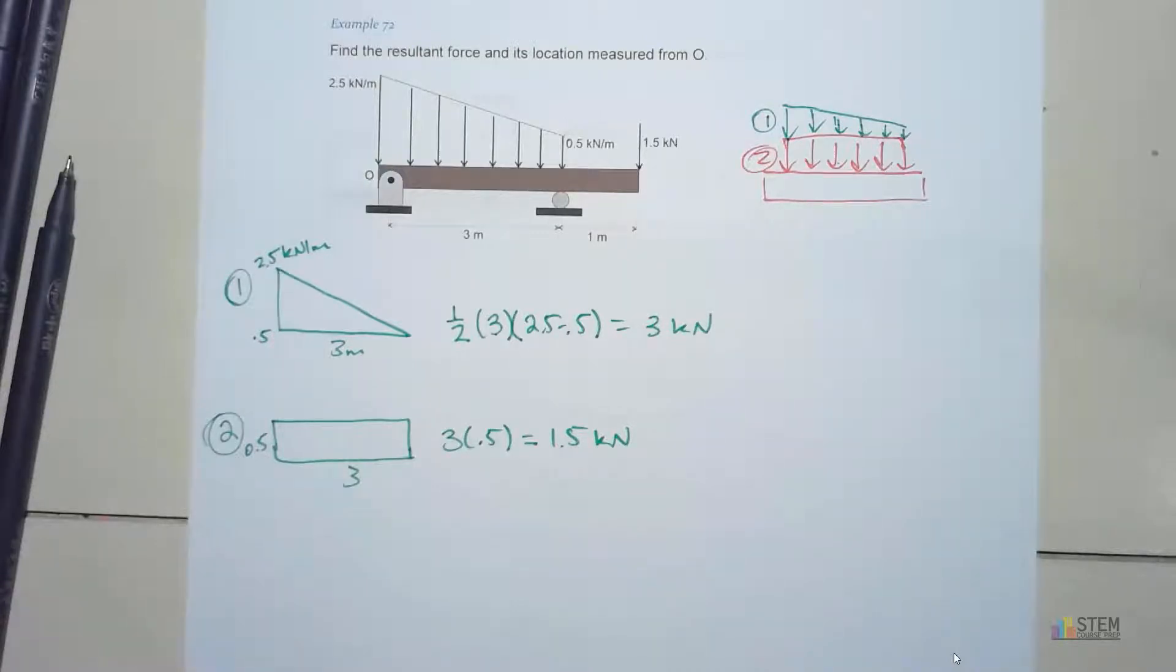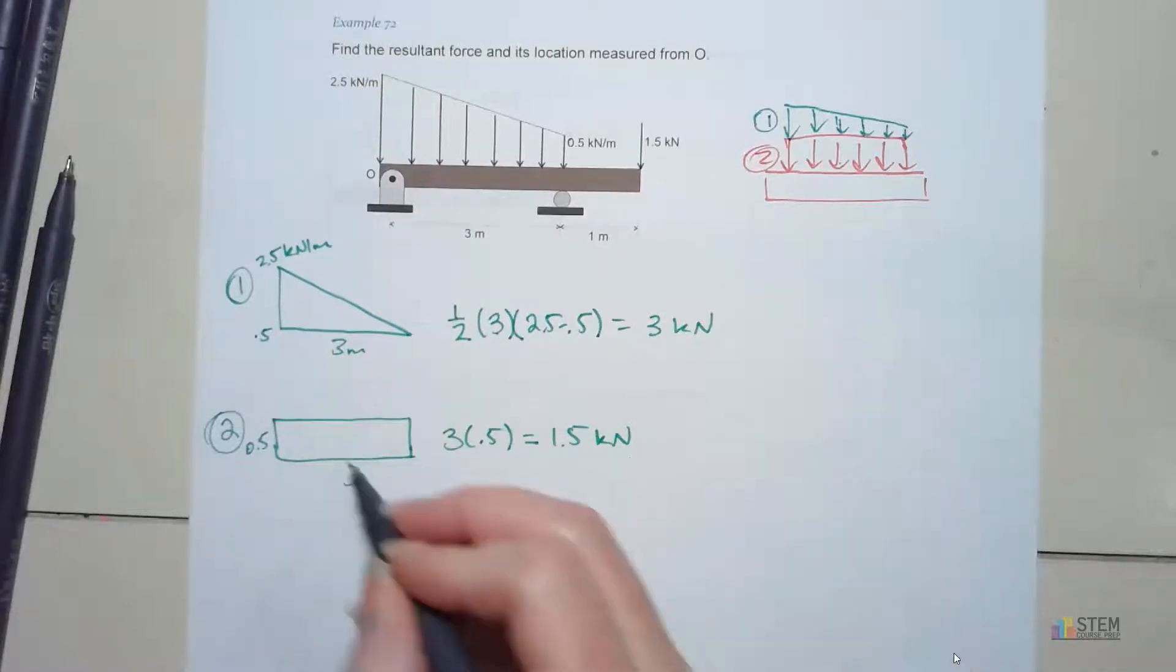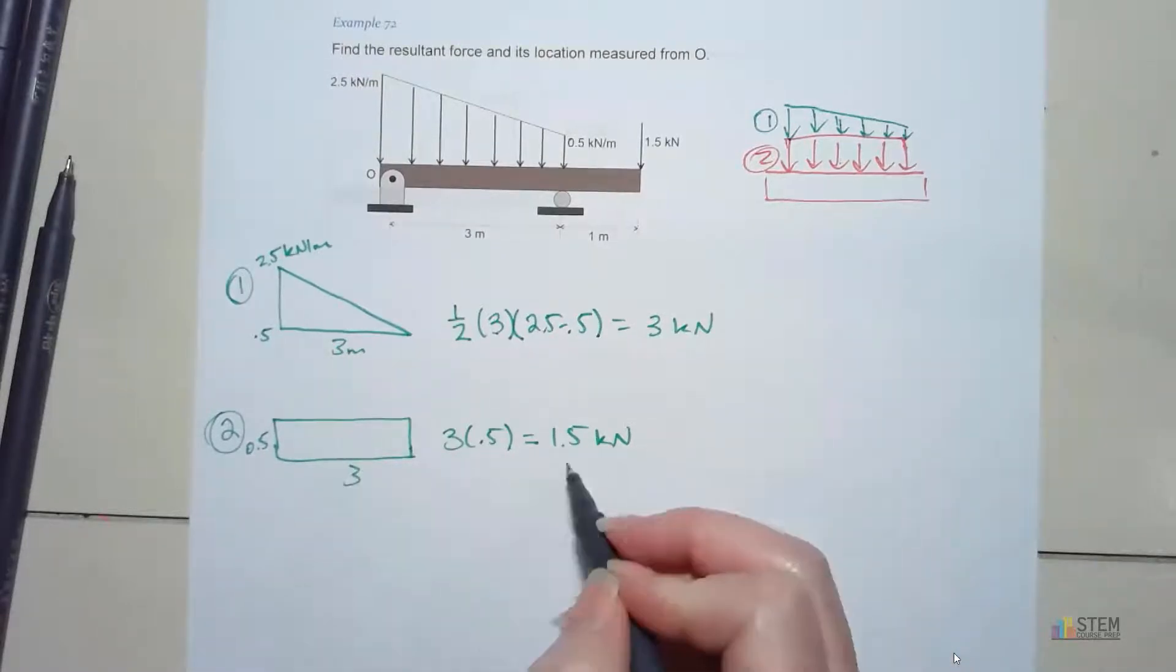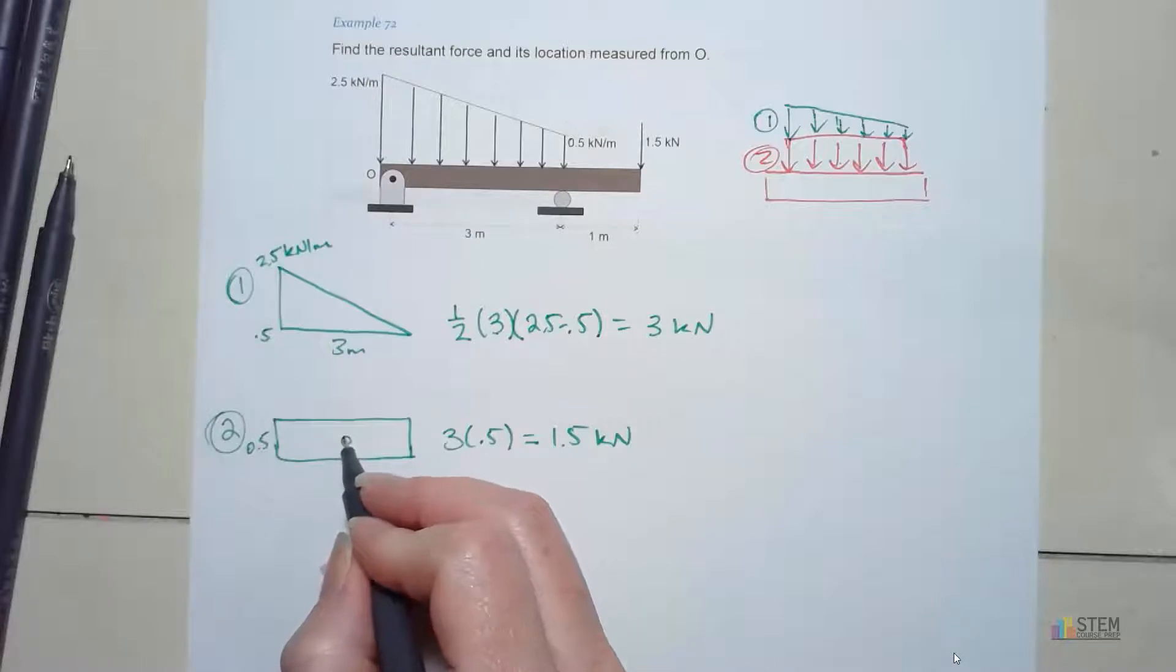Now what we need to do, let's go back and figure out where these forces are acting. Let's start with this rectangle one, because it's pretty simple. This 1.5 kilonewton force from the distributed load is going to act at the centroid of this rectangle. So that's got to be here at the center.